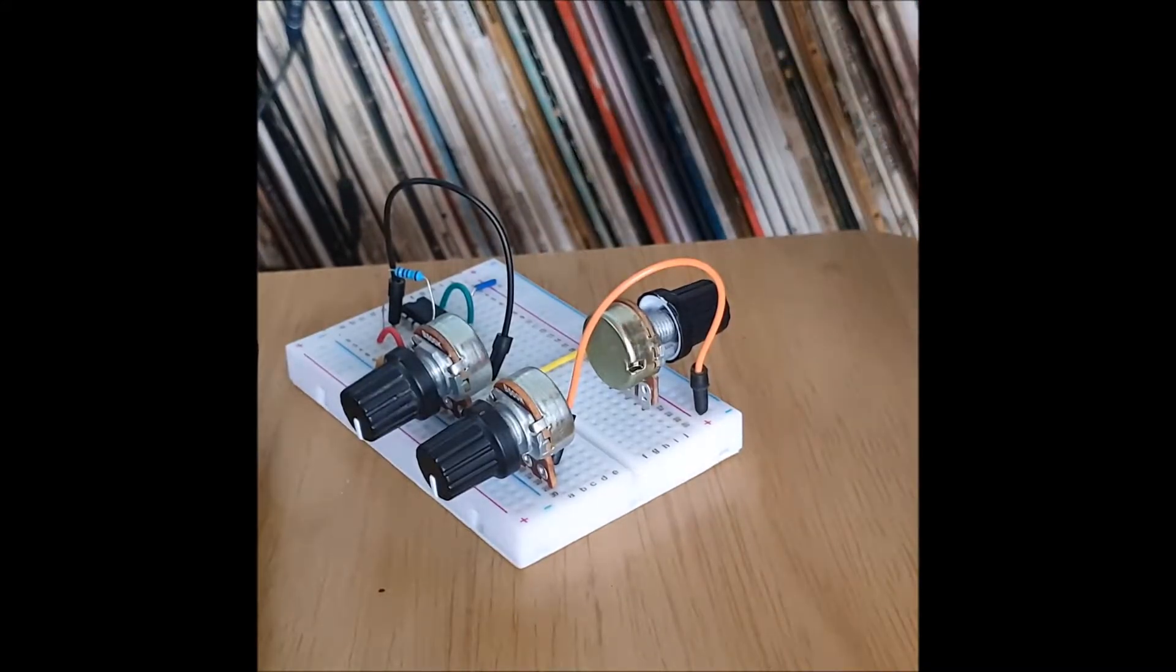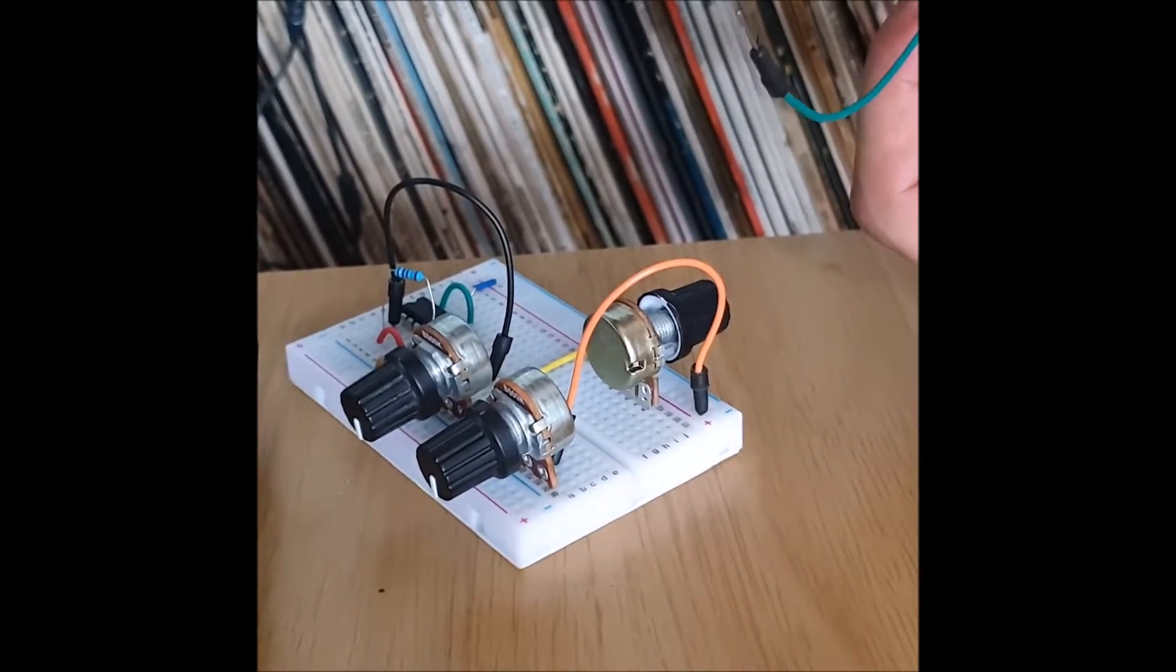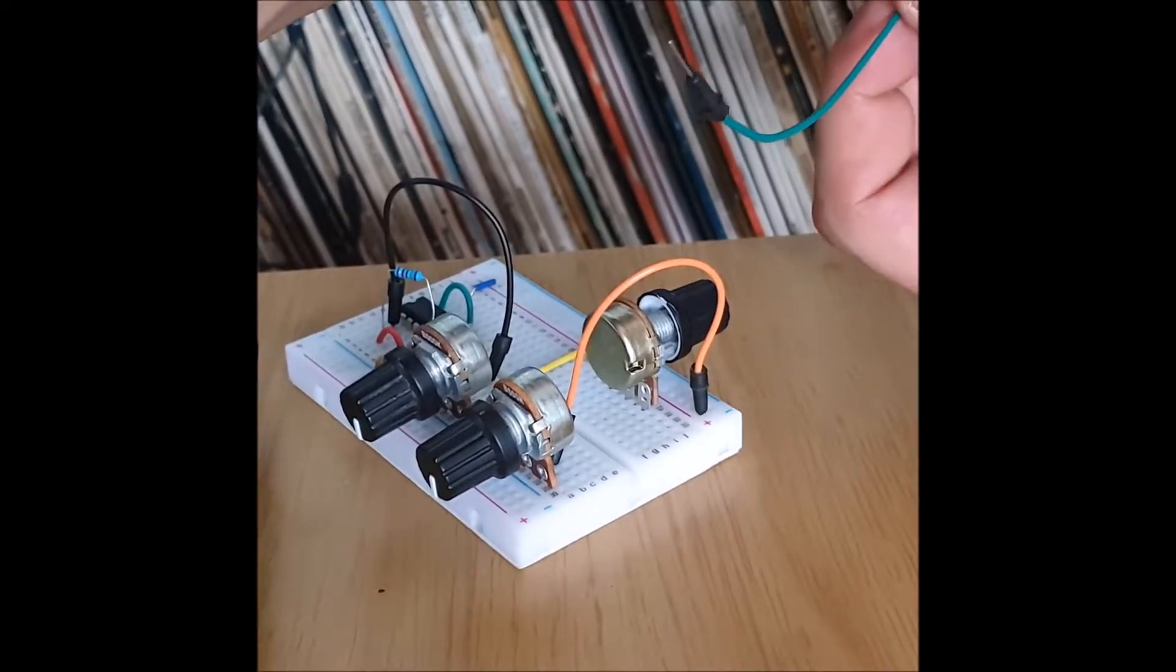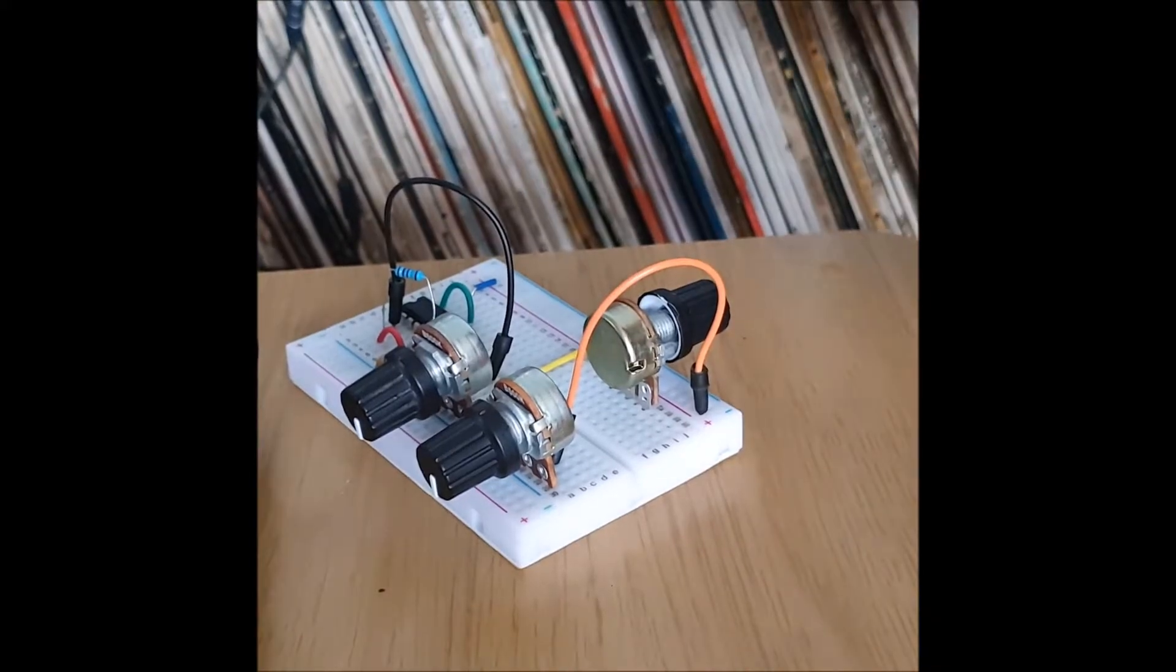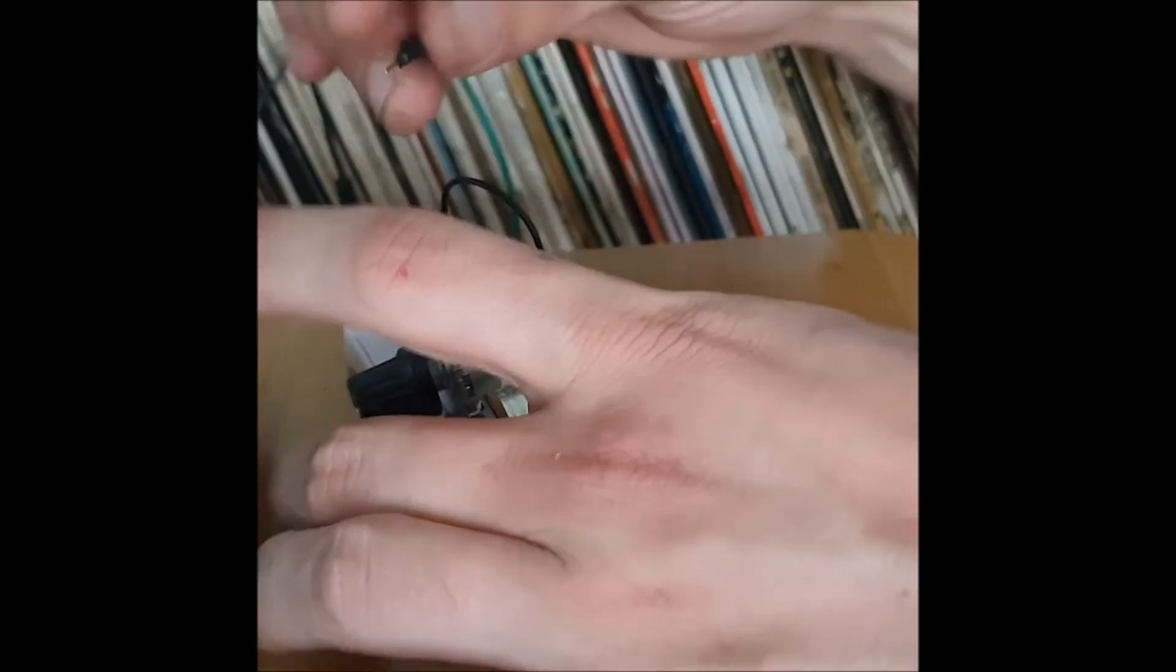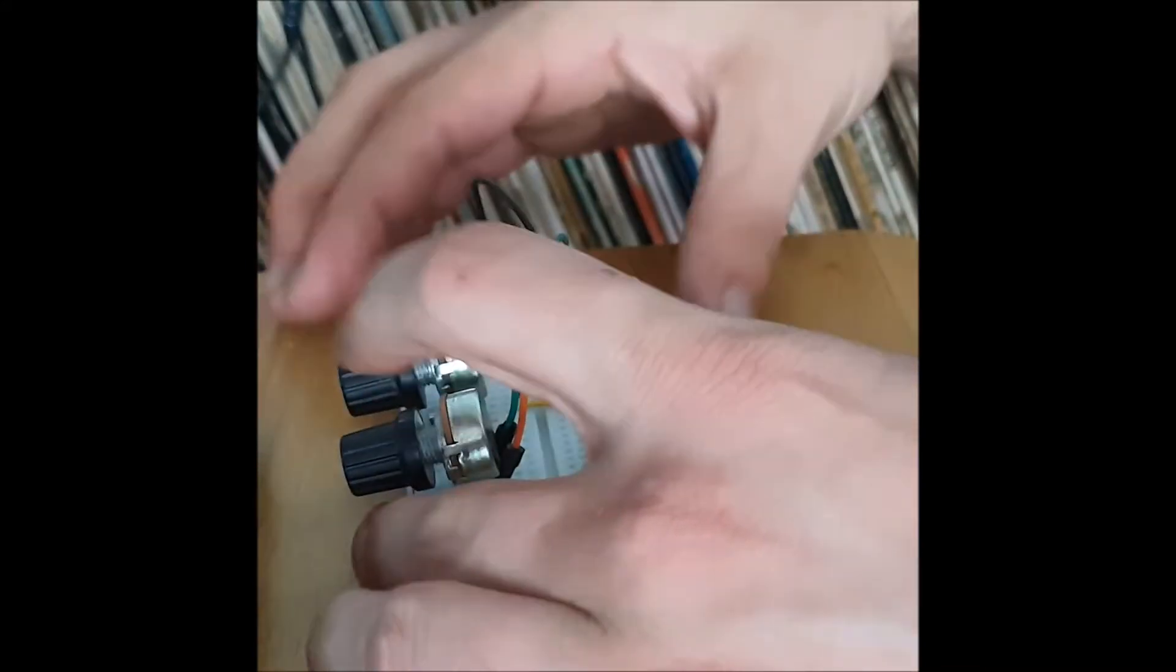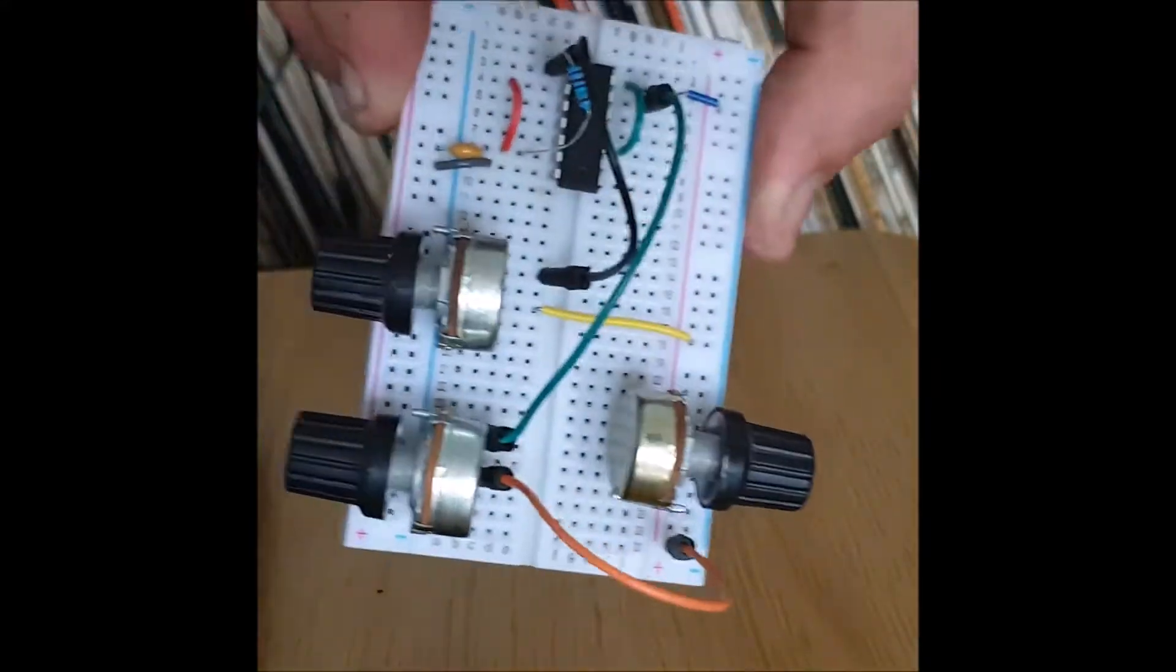Take a jumper, a long one, and go from the outside leg of that same variable resistor to pin 13 on the chip. Fourteen, thirteen, outside leg.